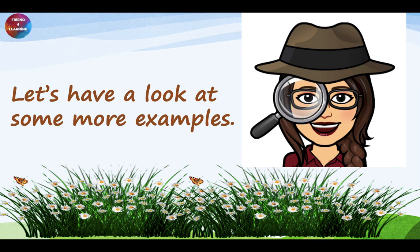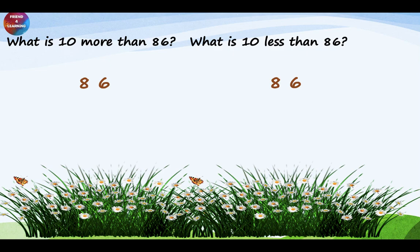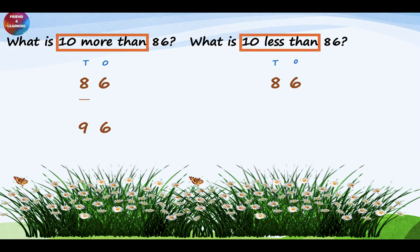Let's have a look at some more examples. What is 10 more than 86? Remember to write the place values — 1's and 10's. The sum says 10 more than, so we are going to add to the 10's place. 8 will become 9, and no changes are made to the 1's place — it remains 6. What is 10 less than 86? Write the place values. The sum says 10 less, meaning subtract the 10's place. When you reduce the 10's place, 8 becomes 7, and the 1's place remains unchanged — that is 6.